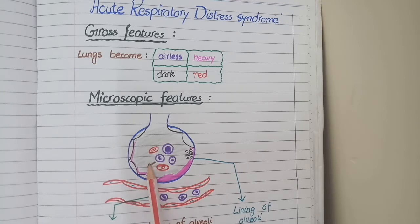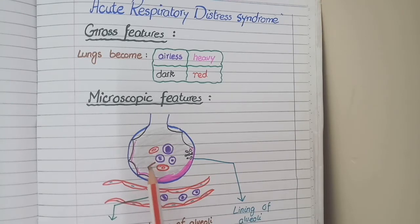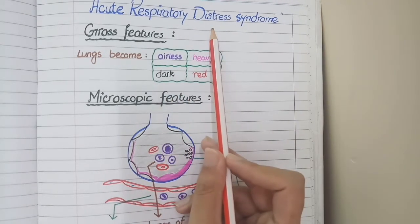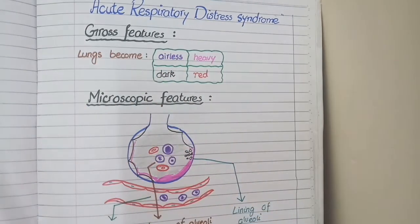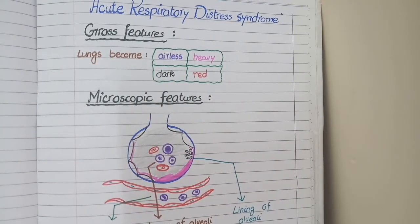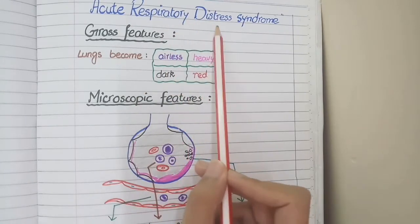Obviously in that case instead of respiration there will be respiratory distress. And if this respiratory distress is caused by acute pathology we will call this acute respiratory distress syndrome.